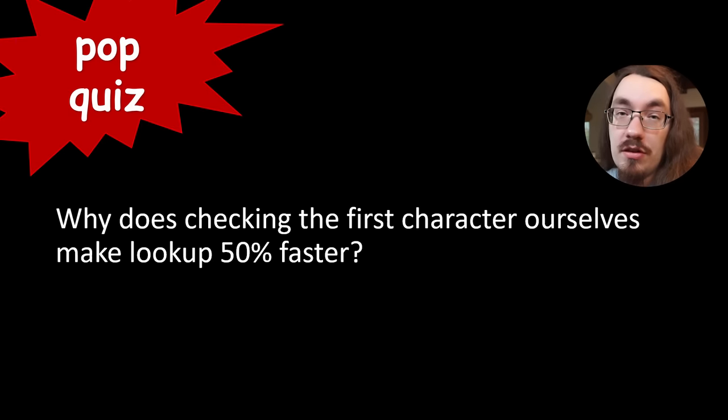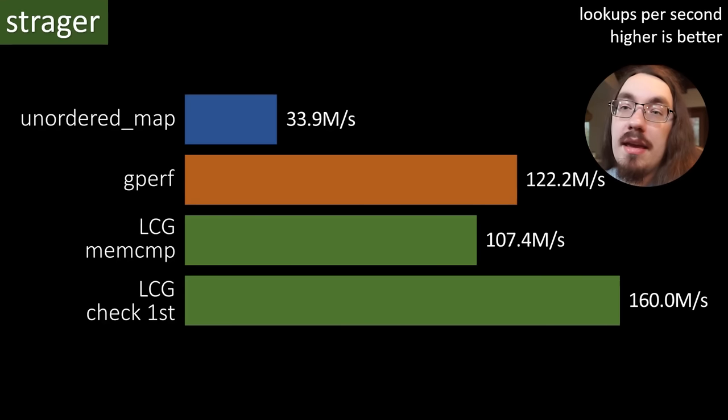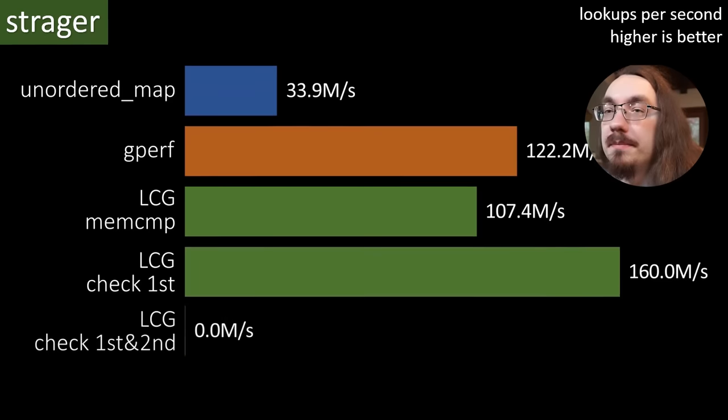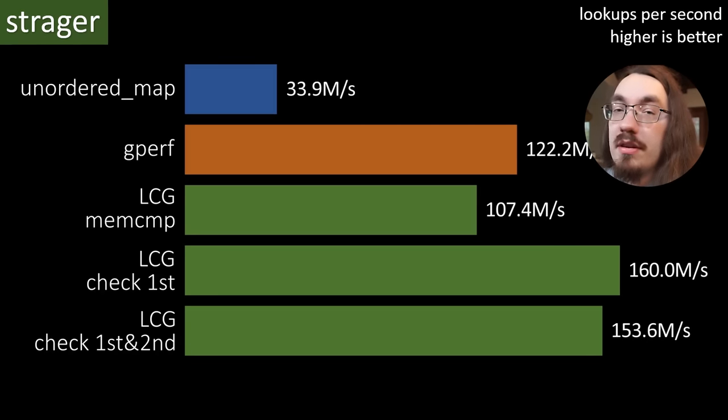Pop quiz. So we saw that checking the first character made it faster, but why does it make it faster? I also decided, hey, if we're checking the first character and that's faster, why not check the first two characters? We already loaded that into memory as part of our hash function. Well, it turns out it's a little slower than just checking the first character. I didn't really investigate why, but there you go.